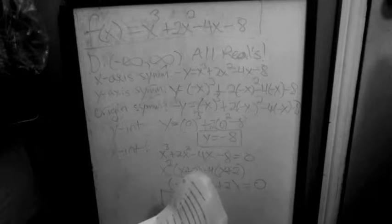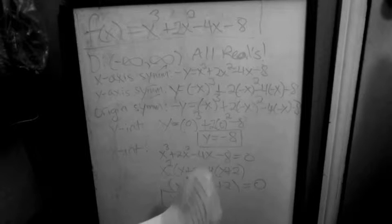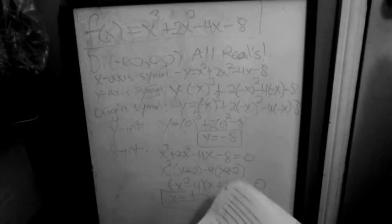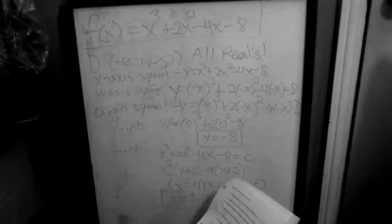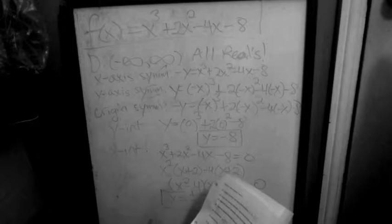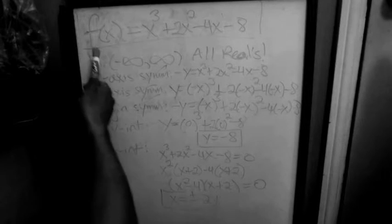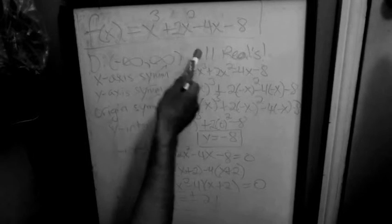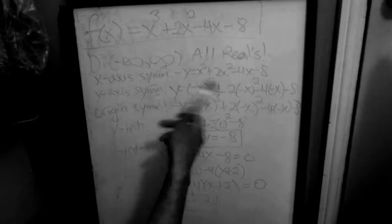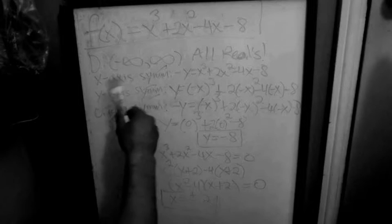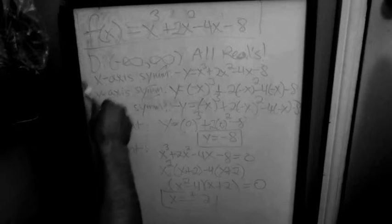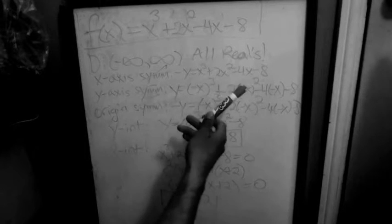We have this calculus problem that involves sketching a graph. We're going to use the domain, symmetry, intercepts, asymptotes, relative extrema, and points of inflection. We also have to identify the open intervals where the function is increasing or decreasing, and its concavity. The function is f(x) = x³ + 2x² − 4x − 8. For a polynomial like this, the domain is all reals — from negative infinity to infinity — since it's not a rational function.